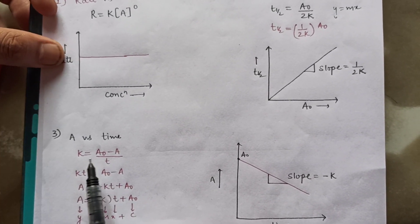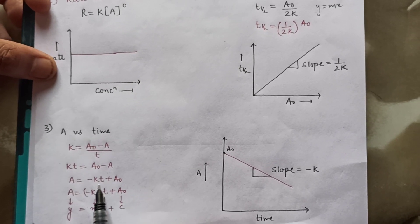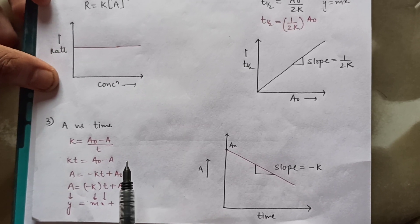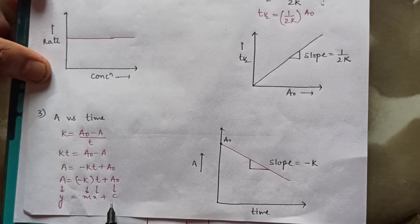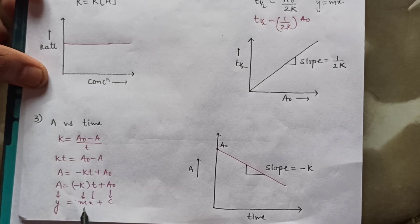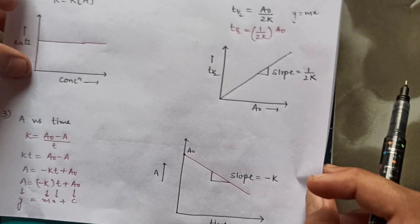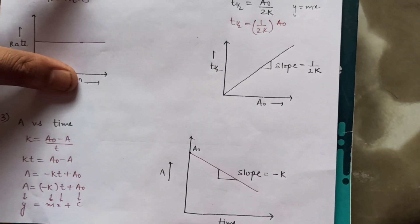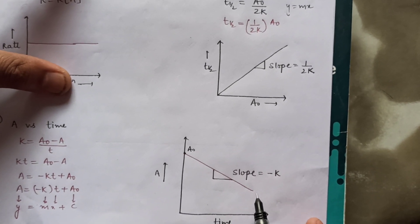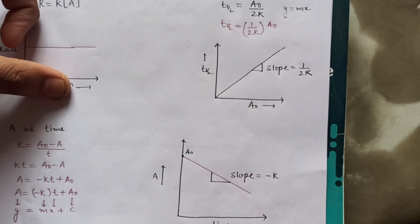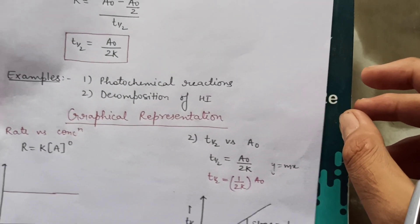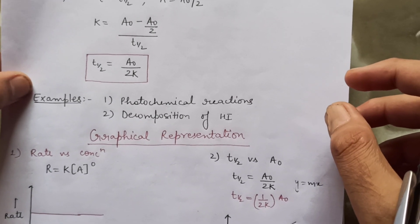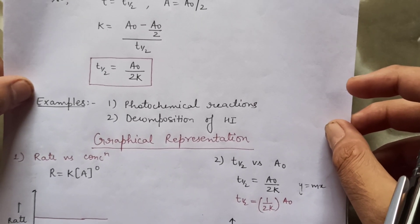From a-naught minus a upon t equals k, we get kt equals a-naught minus a, and rearranging: a equals minus kt plus a-naught. This is the equation of a straight line of the form y equals mx plus c, with a negative slope and a-naught as the intercept. The graph goes downward because of the negative slope. In the next video, I will start with first-order reaction and some more examples of zero-order reaction. Thank you.